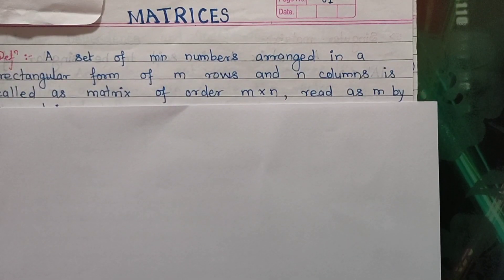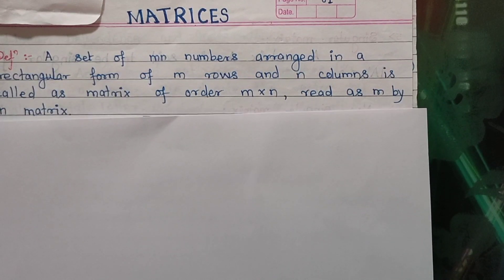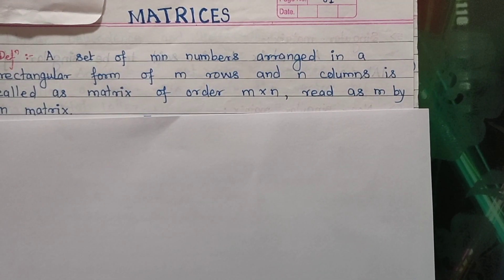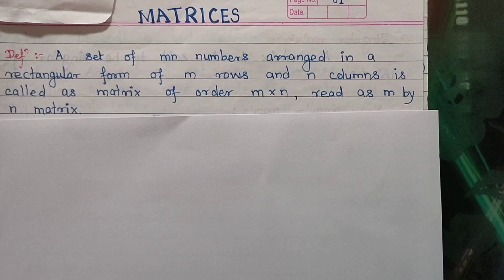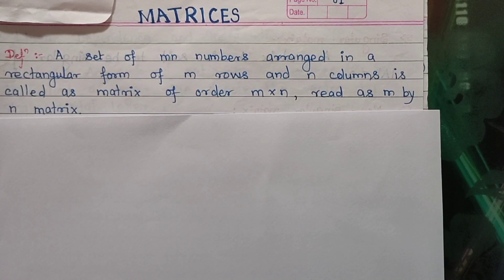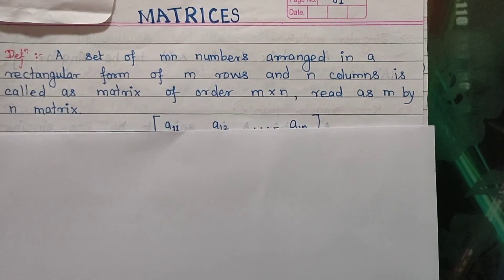So let us see the formal definition of matrix. A set of MN numbers arranged in a rectangular form of M rows and N columns is called a matrix of order M by N. We generally read it as a matrix of order M by N, or sometimes as an M by N matrix.